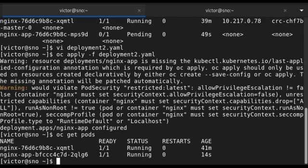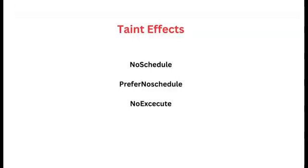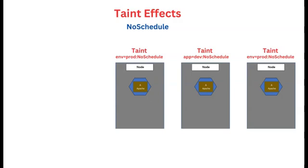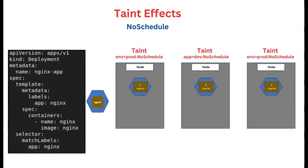So let's define the taint effects. What is the no-schedule taint effect? If nodes have already running pods on them and are tainted with no-schedule, the existing pods will keep running — nothing will happen to them. However, when a new pod is created and is not tolerated to run on the tainted node, the pod will not be scheduled and will remain in pending state, just like we saw in the example.